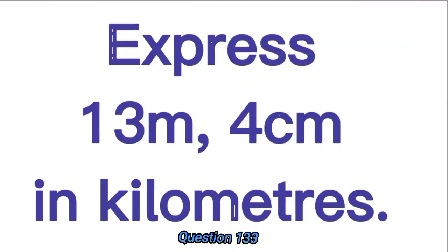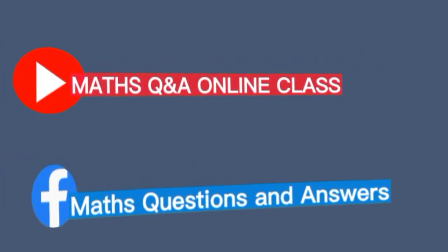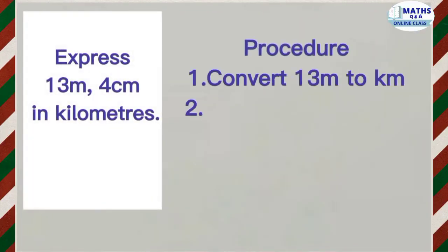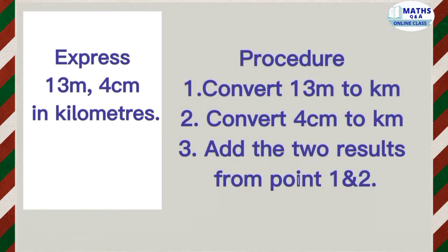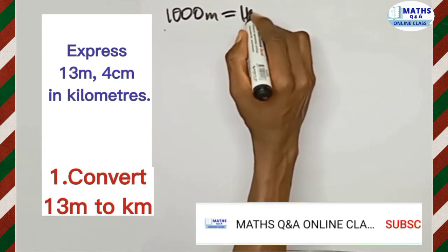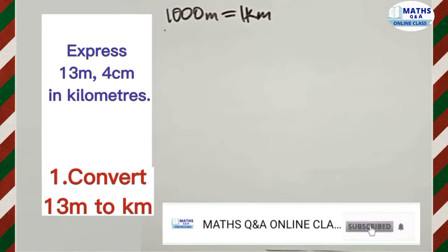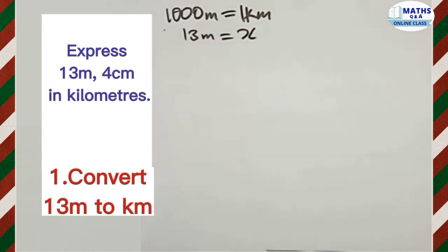Express 13 meters 4 centimeters in kilometers. We have 13 meters and we have to convert it into kilometers. The first thing to note is that a thousand meters equals one kilometer. So if we want to find 13 meters in kilometers, that means we have 13 meters equal to some number X in kilometers.